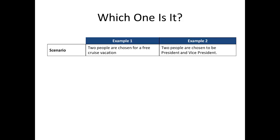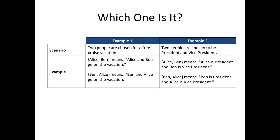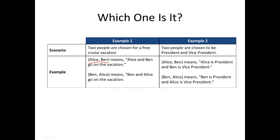For example, let's look at these two scenarios. In example one, we're choosing two people to go on a free cruise vacation. In example two, we're also choosing two people, to be president and vice president. Now, compare Alice and Ben to Ben and Alice in both of those situations. In example one, Alice comma Ben means both Alice and Ben go on the vacation.